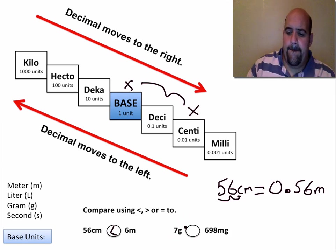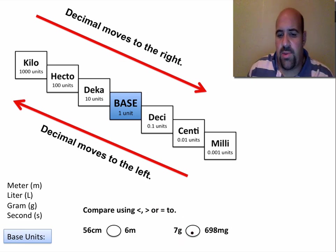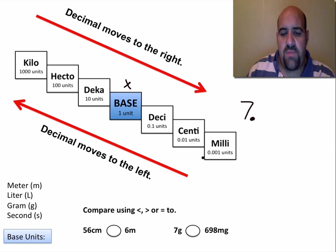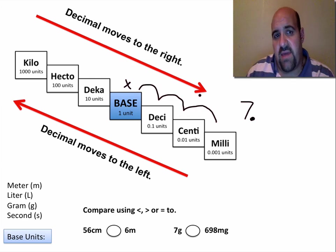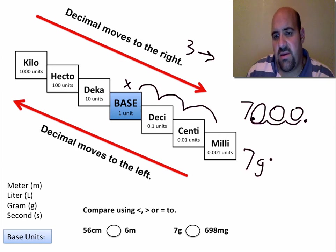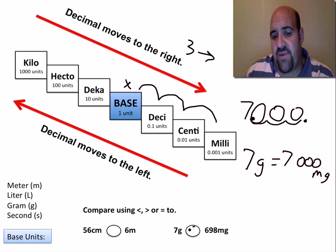Another comparison: 7 grams or 698 milligrams — which is greater? Take 7 grams; gram is a base unit with a decimal assumed here. Convert to milligrams by going down one, two, three steps — decimal moves three places to the right. Take that 7 and go one, two, three — put in zeros. We see that 7 grams equals 7,000 milligrams. So obviously, 7 grams is much greater than 698 milligrams.